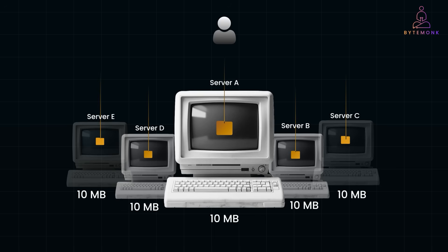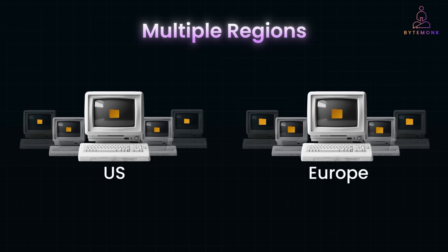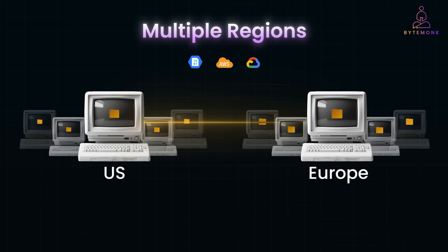As our system grows, we may need to store data in multiple regions to reduce latency and comply with data residency laws. This means setting up file servers across different data centers around the world — users from the US are directed to file servers in the US, and users from Europe are directed to servers in the EU region. Cross-region replication ensures files exist in multiple locations for disaster recovery. Cloud providers like AWS S3, Google Cloud Storage, and Azure Blob Storage all use this approach to deliver high-speed, low-latency storage access worldwide.